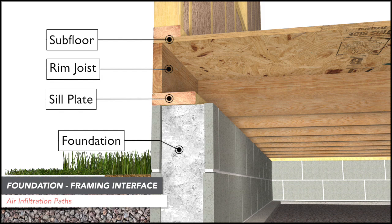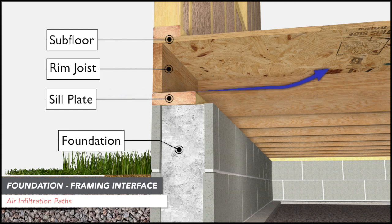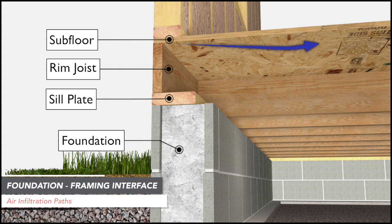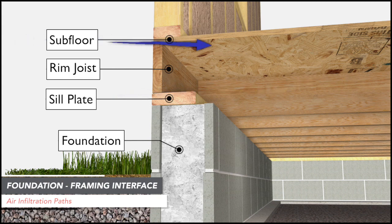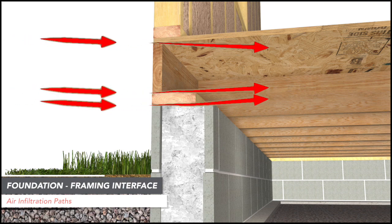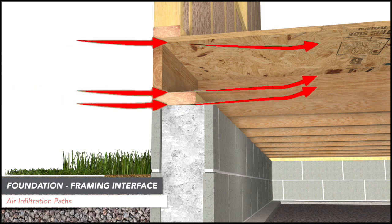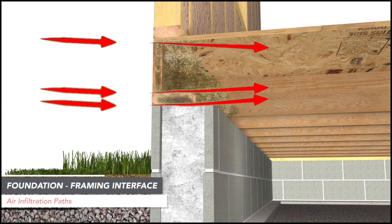Shown here are the typical air infiltration paths at the foundation framing interface. Aside from penetrations from piping and wiring, air infiltration occurs at the gap between the bottom of the sill plate and the top of the foundation wall, the gap between the bottom of the rim joist and the top of the sill plate, and the gap between the underside of the subfloor and the top of the rim joist. Reducing air infiltration at these locations is critical to achieving building air leakage limits required by current building and energy codes. During winter in cold climates, the stack effect drives cold dry air into the building. During summer months in warm humid climates, the stack effect drives warm moist air into the building, and infiltration of hot humid air at the framing foundation interface can condense on the sill plate, rim joist, and adjacent framing, resulting in ideal conditions for wood-destroying organisms like mold, mildew, and termites.